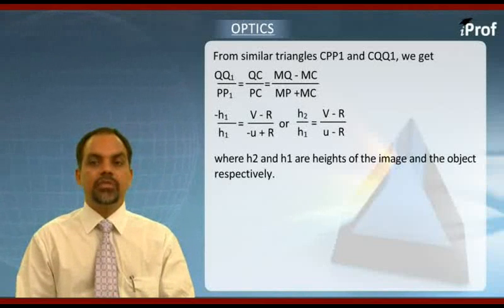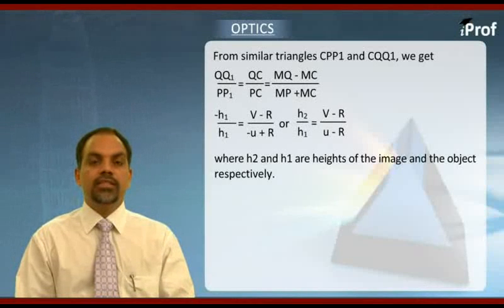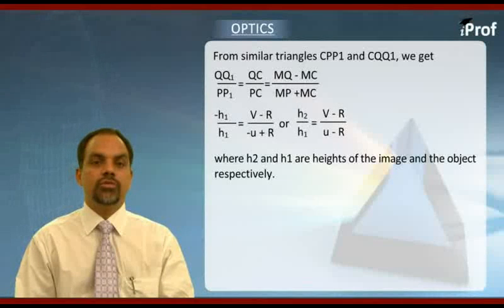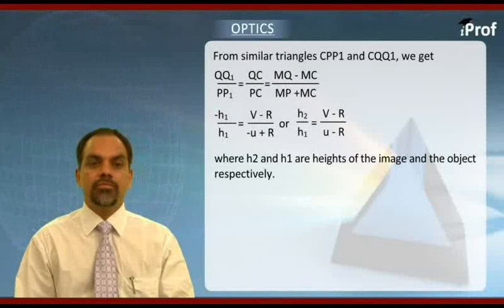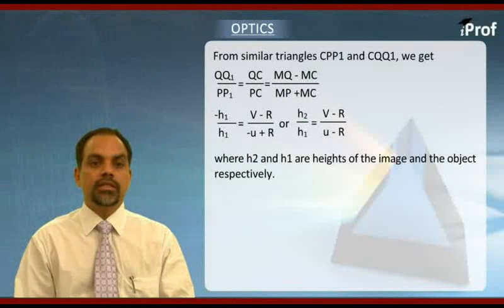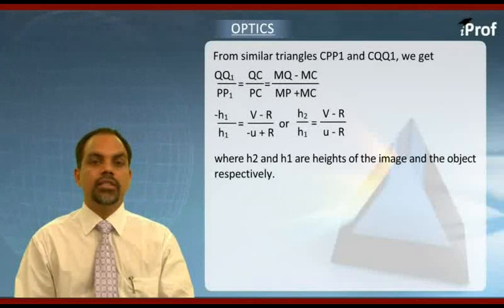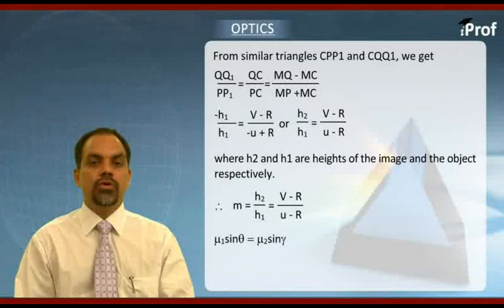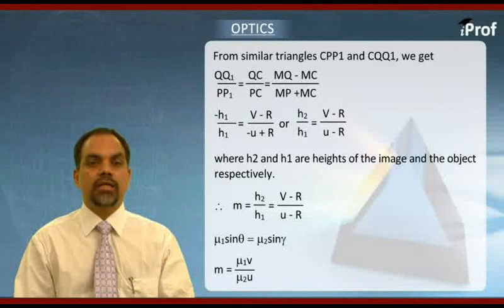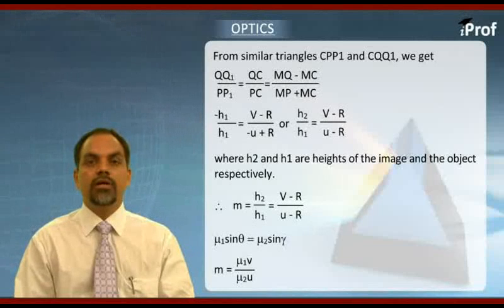Here we have written magnification in terms of object and image distance. This expression for magnification can be modified and it can be written in another way also. If we make use of Snell's law that says mu1 sin theta will be equal to mu2 sin r, making small angle approximation we can replace sin of angles by corresponding tangent of their angle. We get a very simple relationship that says m is equal to mu1 v upon mu2 u. This is again for paraxial rays. The necessary mathematics is worked out on the screen. Please go through it. We have another form of magnification.